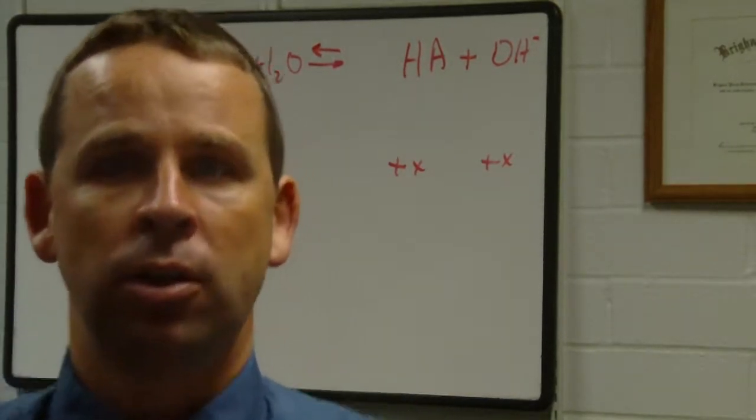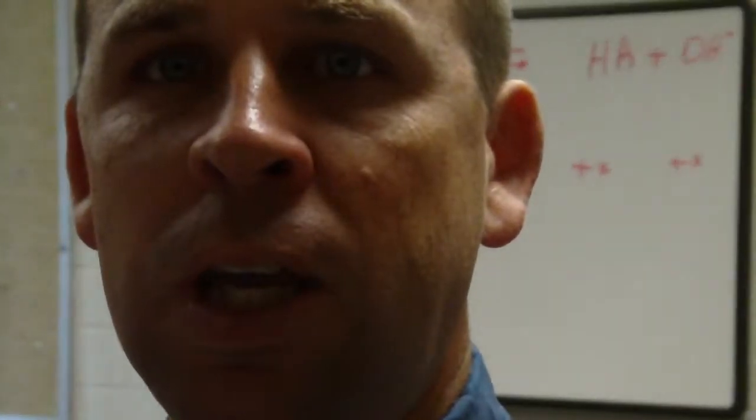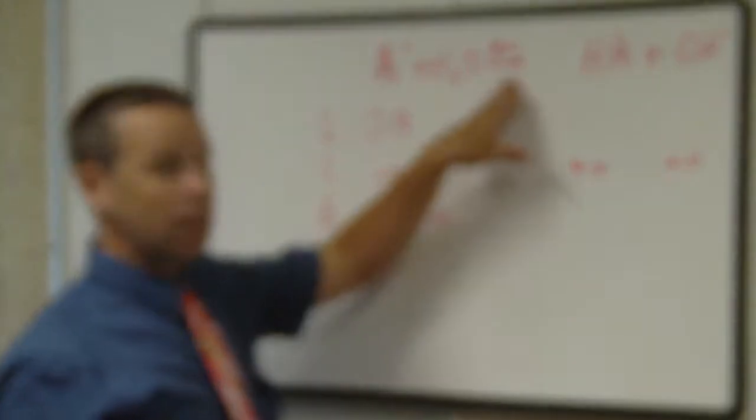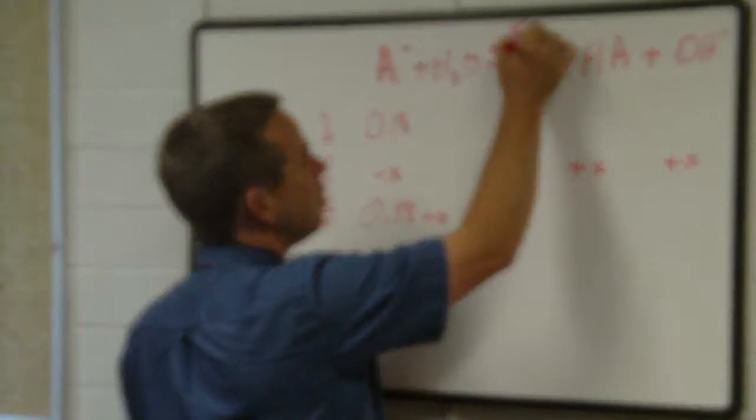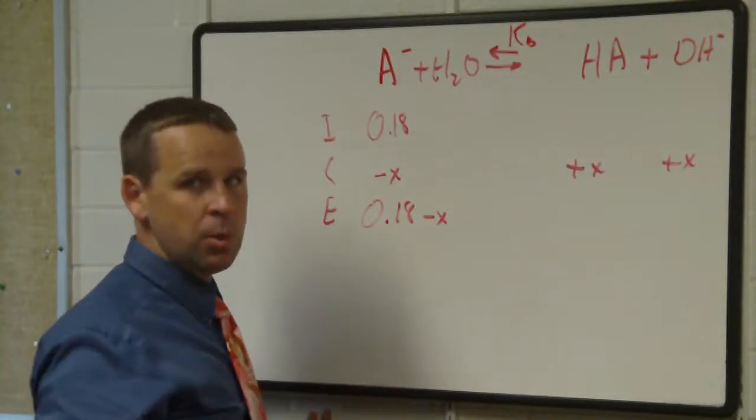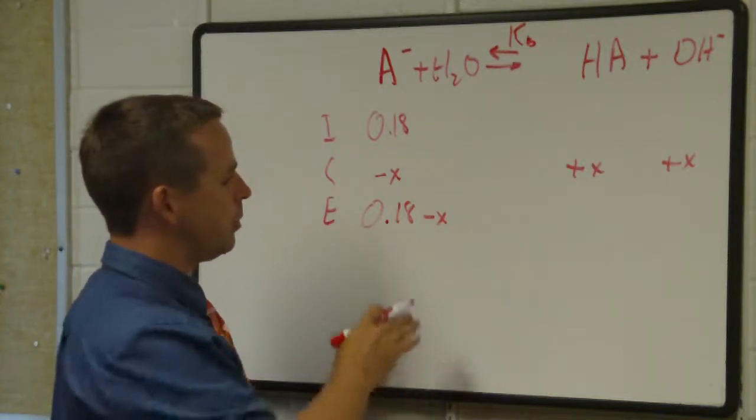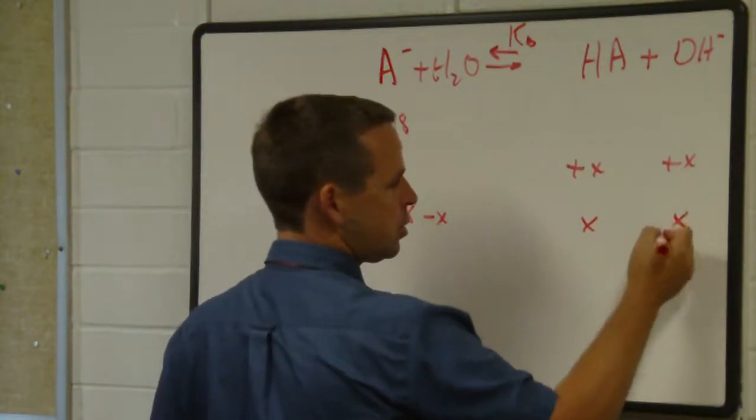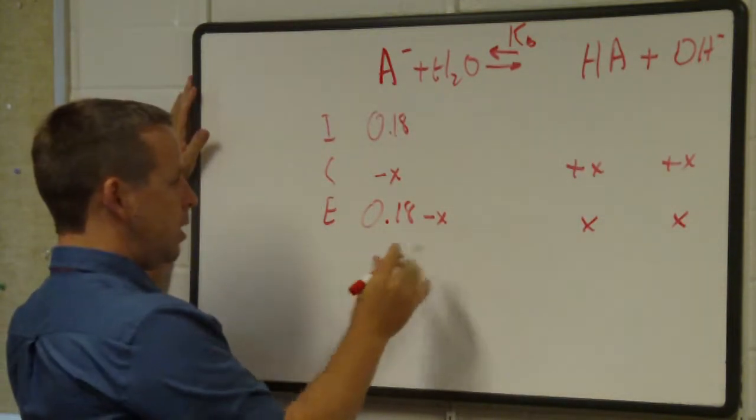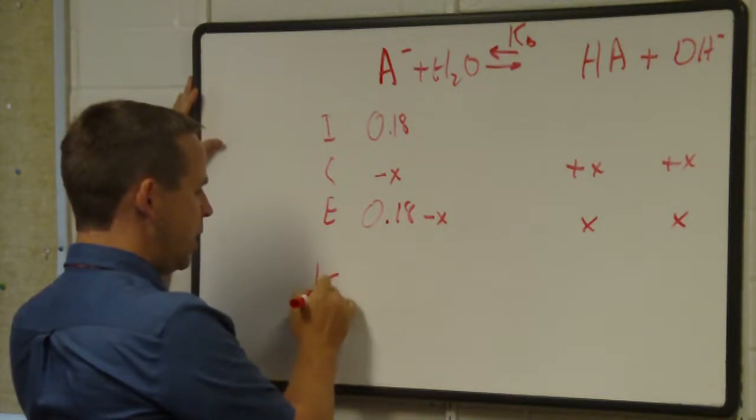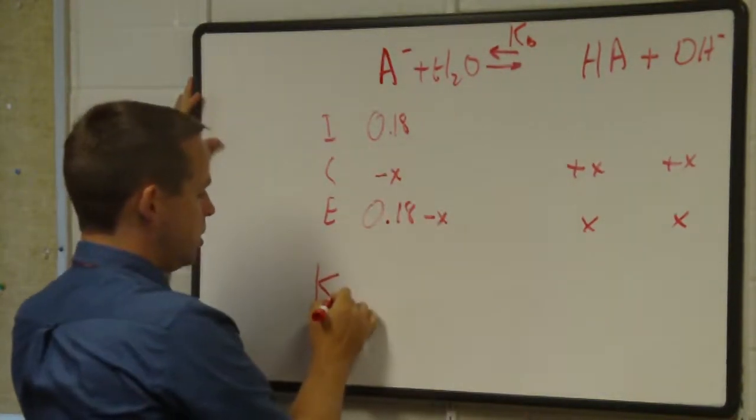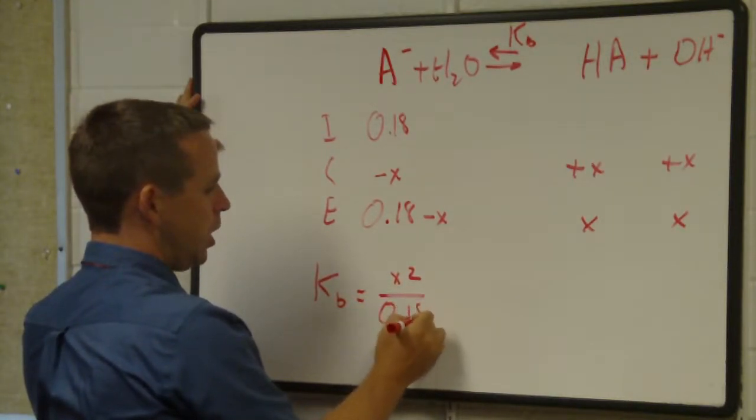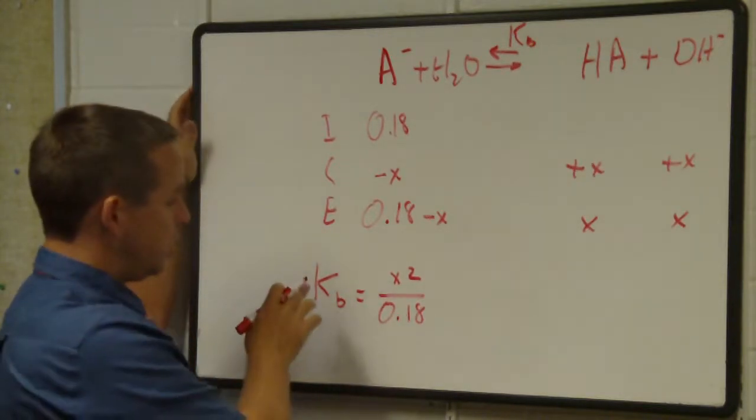At equilibrium the concentration's going to be 0.18 minus X. We don't know the Ka initially, we don't know the Ka of this acid or the Kb. This is the Kb that would govern this equation. We don't know what it is but we can assume it might be small, it's a weak acid so it's probably small, so we'll discard that X there.